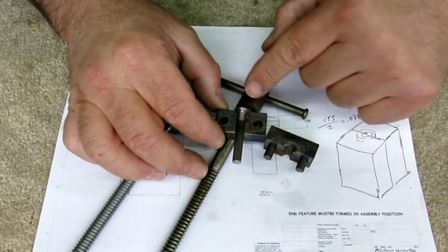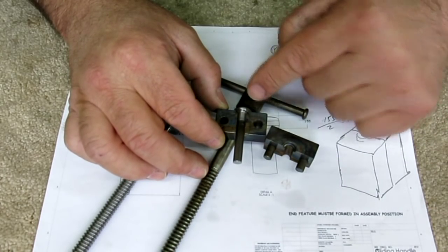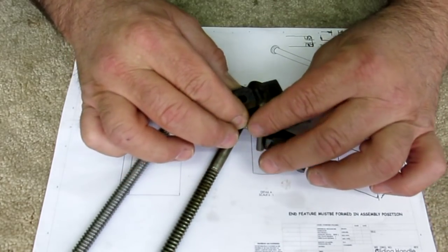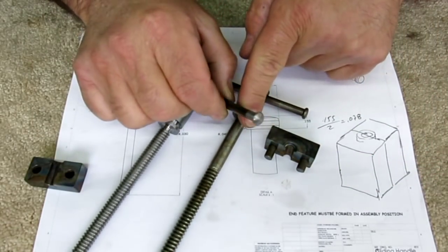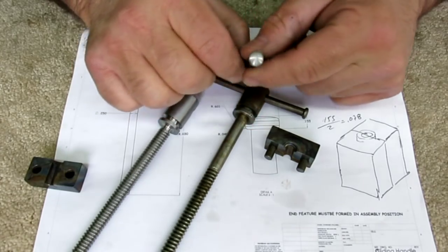Obviously the top's all beat up by the hammer. So at that point you do a little filing and a little smoothing and that's what you end up with. So that's one way you can do that.